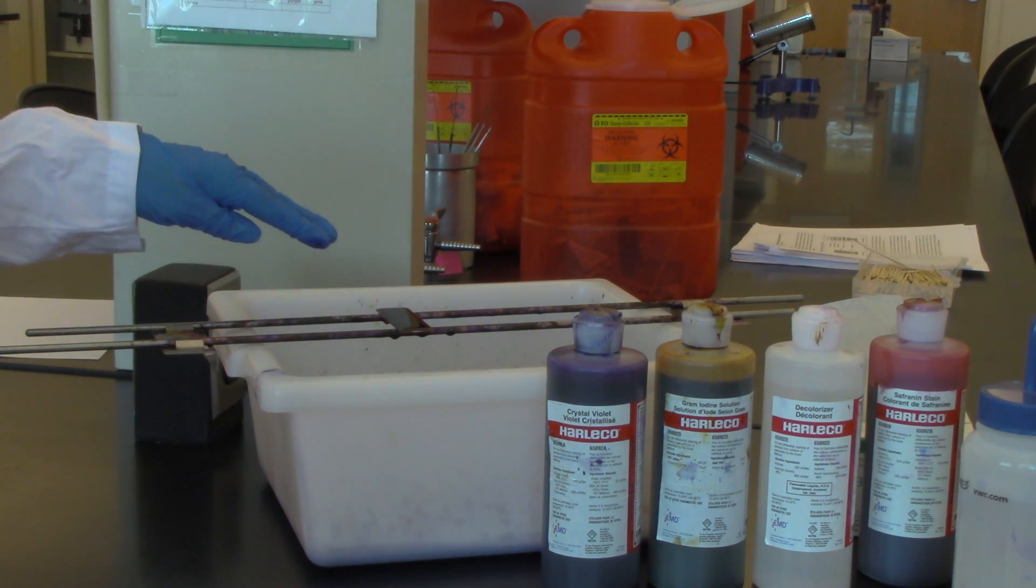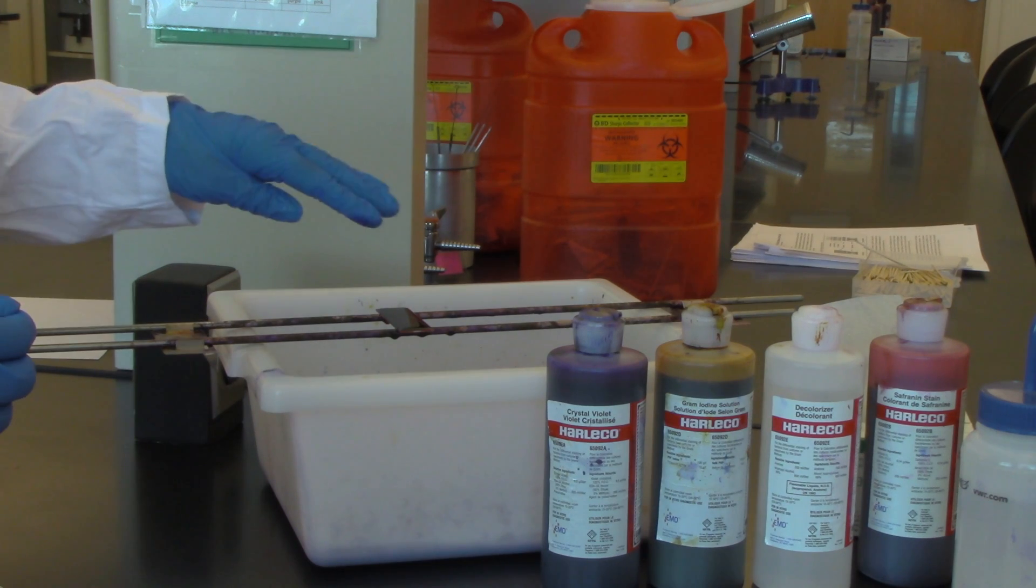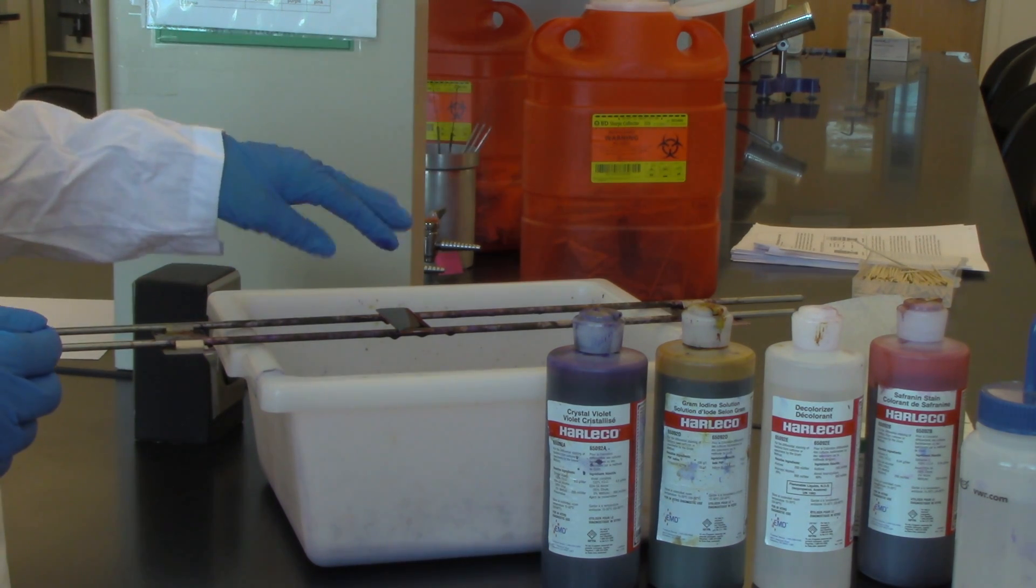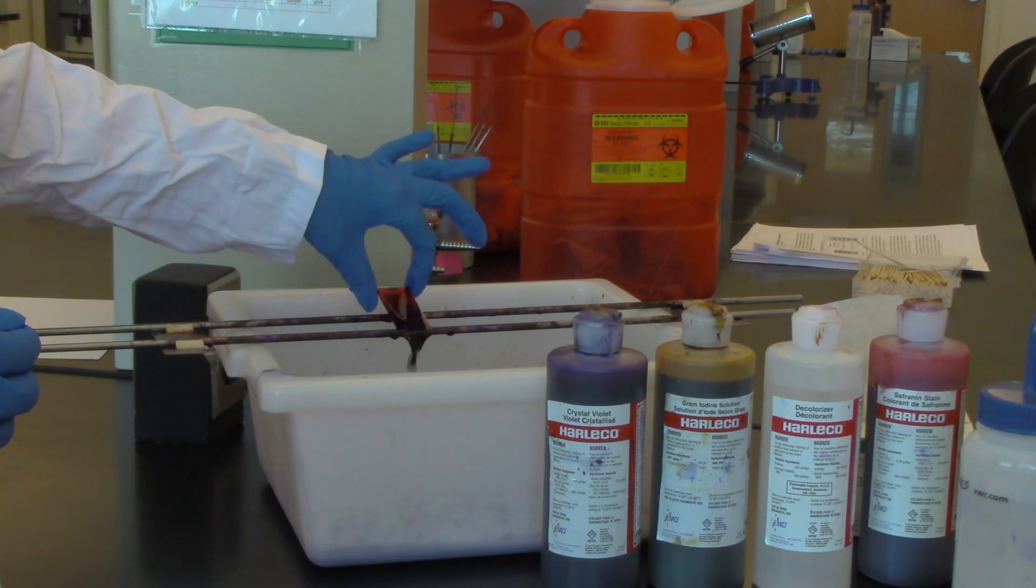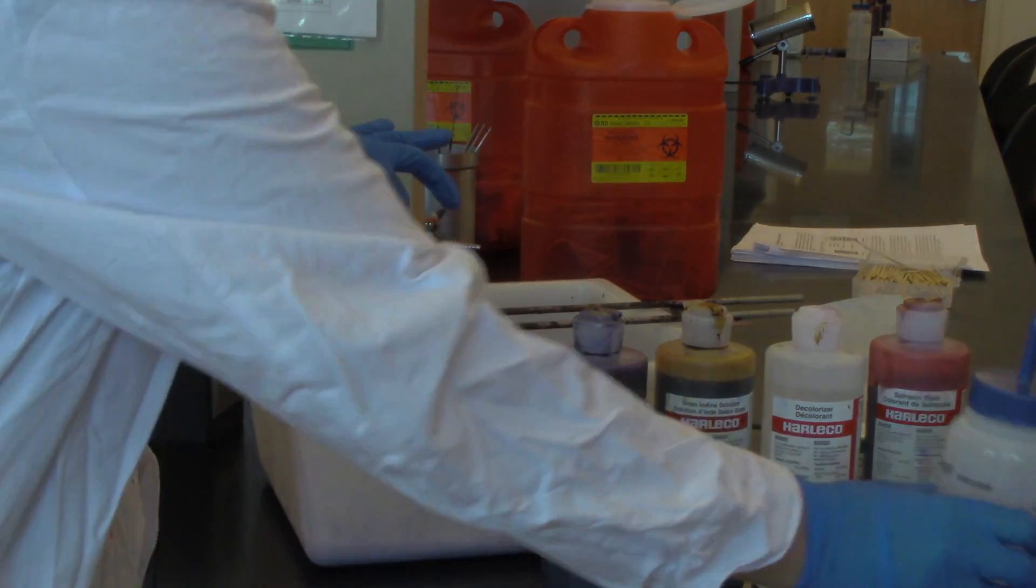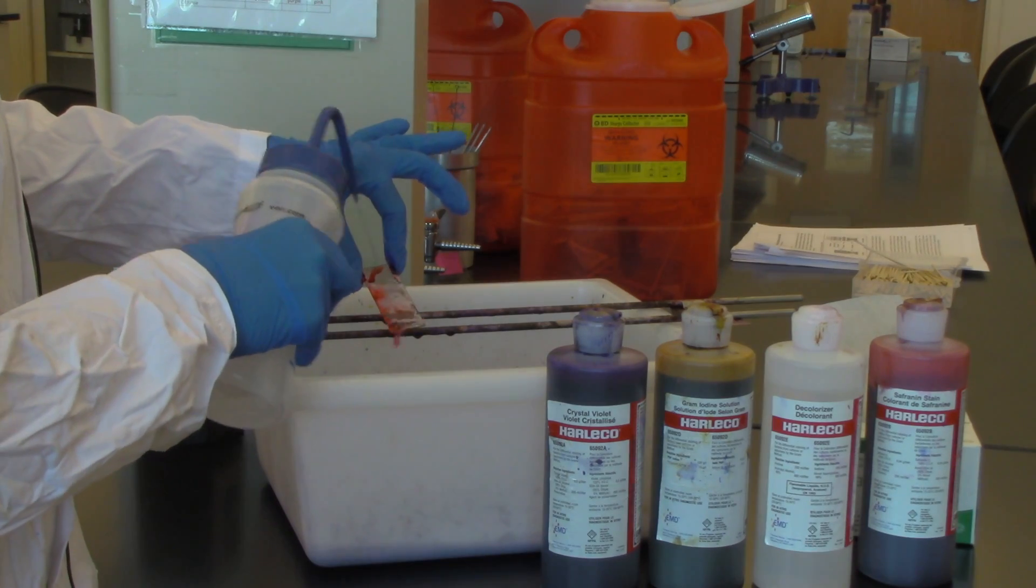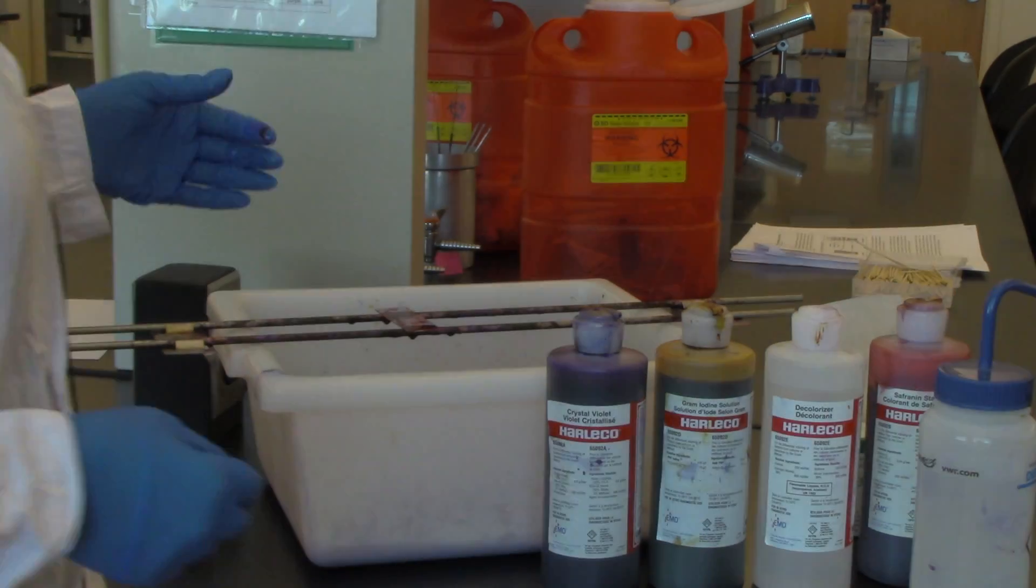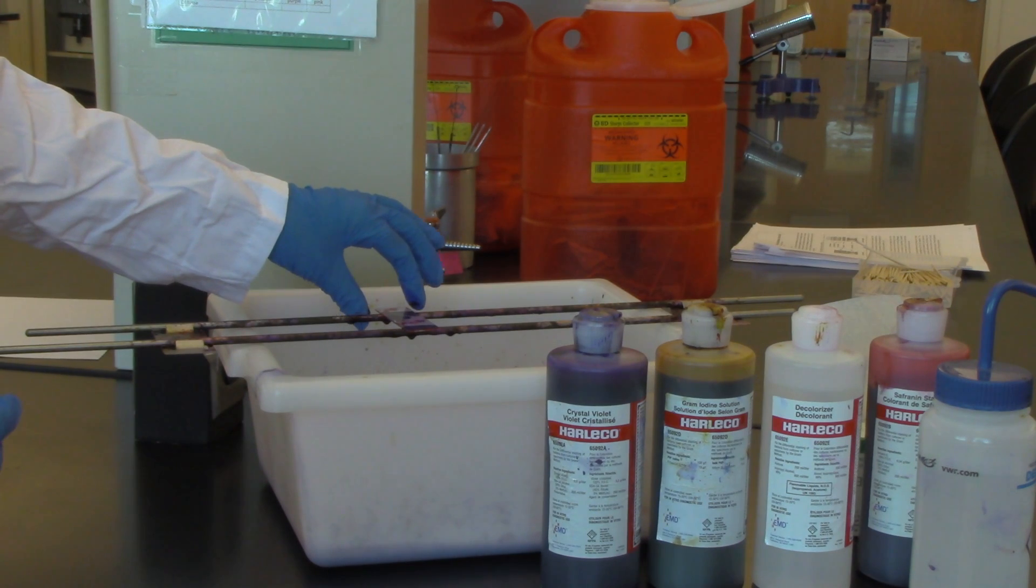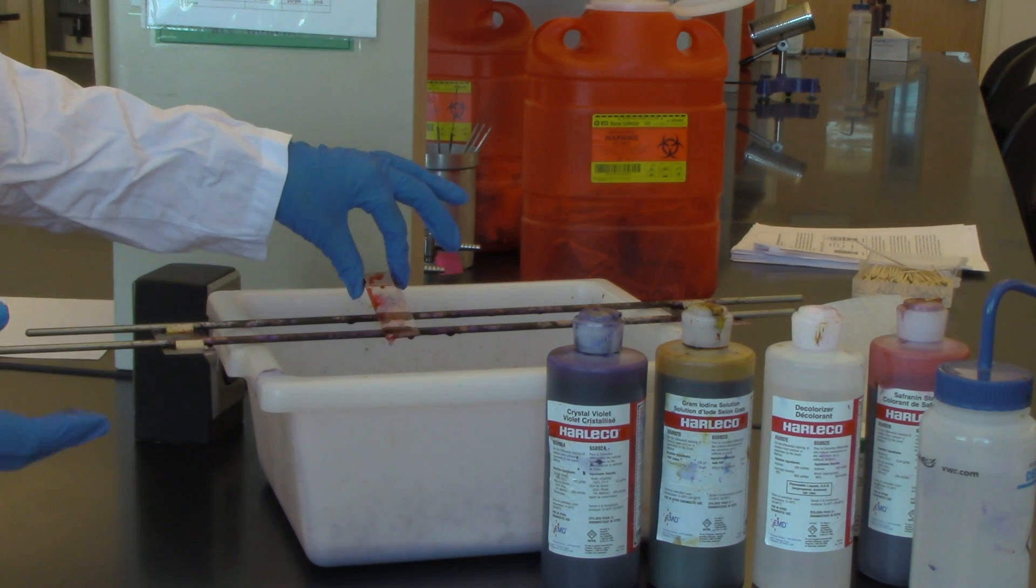Remember that in the gram stain, the gram-positive cell is going to—I'm going to go ahead and rinse here because I'm at my 30 seconds—the gram-positive cell is going to take in the peptidoglycan and it'll get trapped inside that thick peptidoglycan layer. The gram-negative cell does take in the crystal violet stain initially.